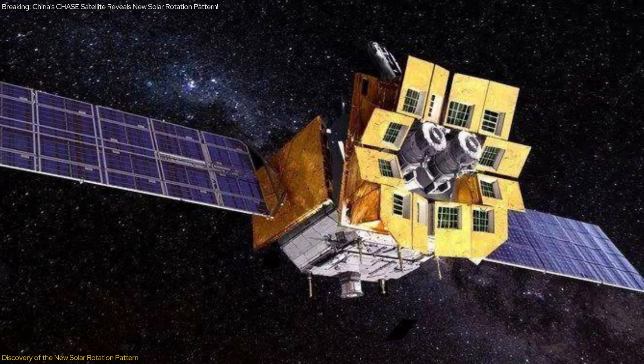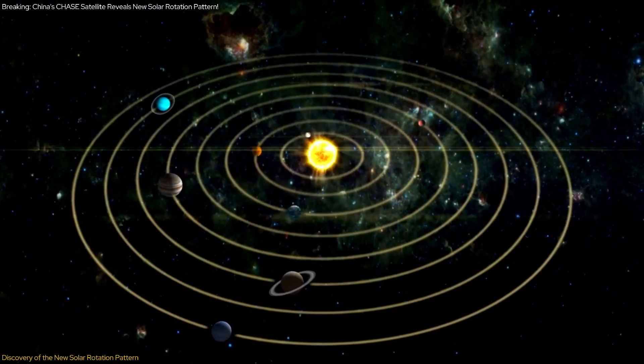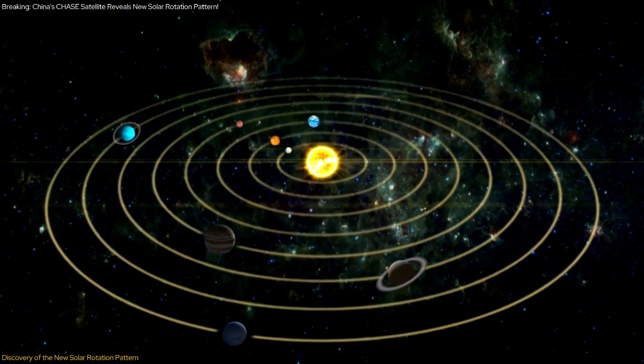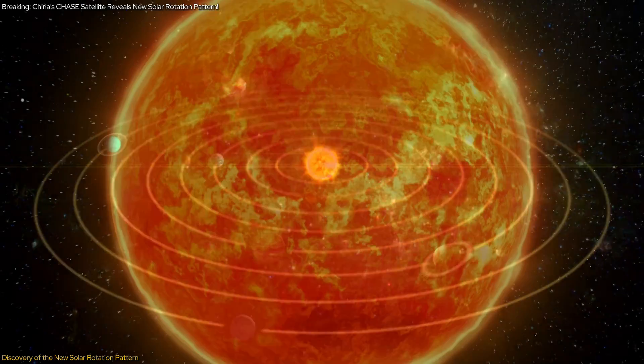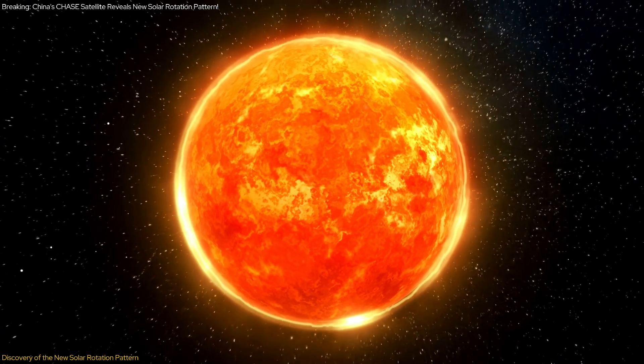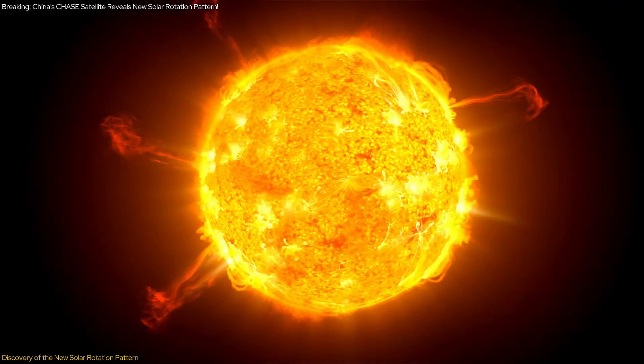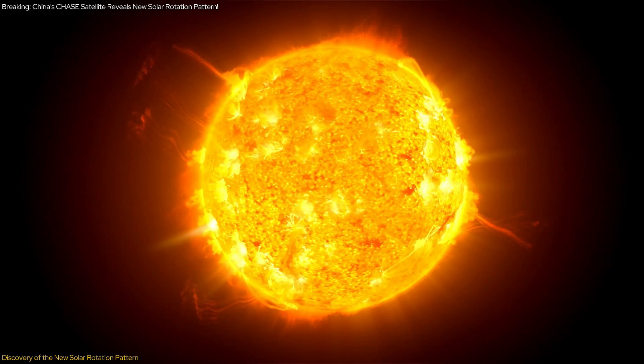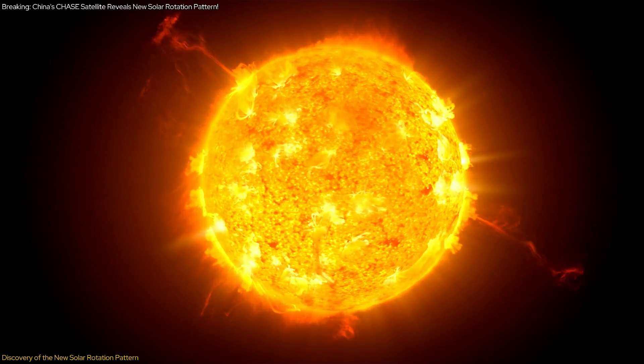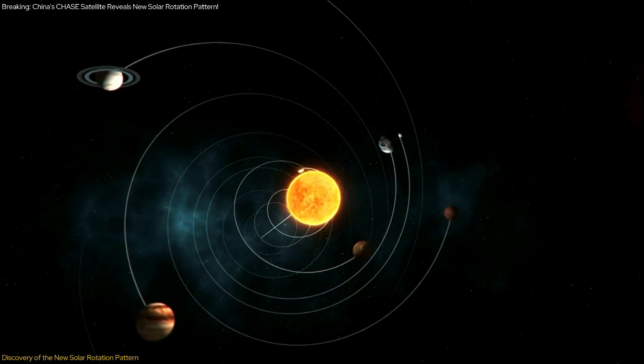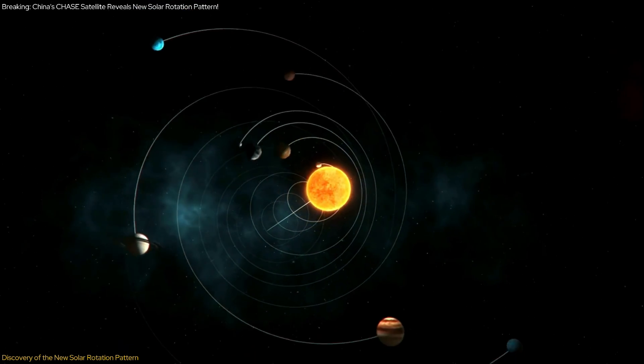The breakthrough came when scientists generated a precise three-dimensional model of solar atmospheric rotation. This model, created using the high-resolution data from Chase, allowed researchers to observe the dynamics of the sun's atmosphere with unprecedented clarity. The evidence collected showed that, contrary to previous beliefs, the sun's rotational speed actually increases with altitude. This unexpected finding suggests that there must be an unknown force driving this rotation in the upper atmospheric layers.